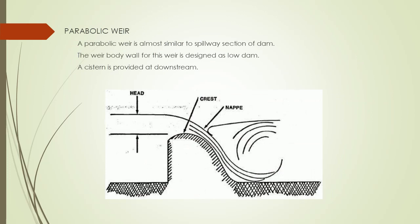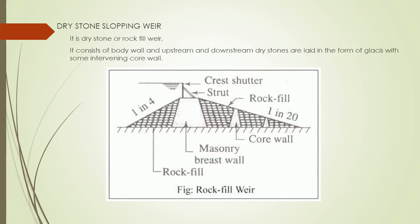The third type of weir is the parabolic weir. A parabolic weir is almost similar to the spillway section of a dam. The weir body wall is designed as a low dam, and a cistern is provided at the downstream. The last type of weir is the drystone sloping weir. It is a drystone or rock-fill weir consisting of a body wall, and on the upstream and downstream sides, drystones are laid in the form of a glacis with some intervening core wall.